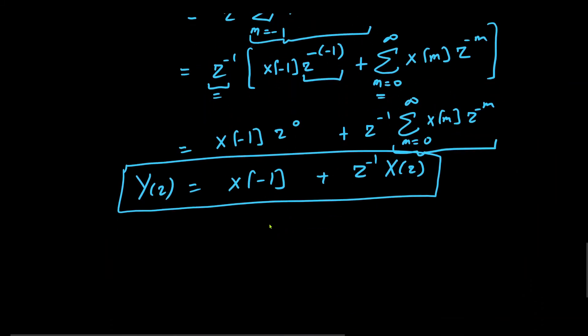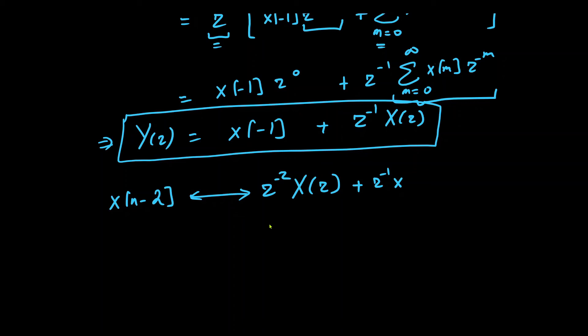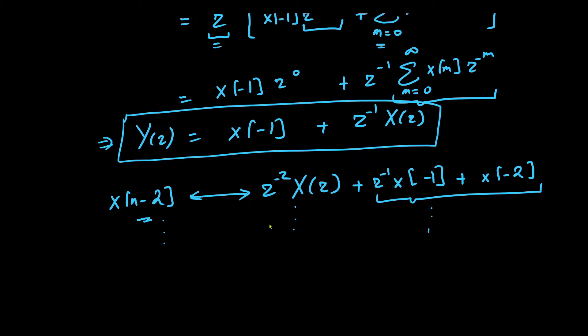For repeated applications — for example x[n-2] — the z-transform is z^(-2)·X(z) + z^(-1)·x[-1] + x[-2]. So if the delay is two units, we have two auxiliary conditions to satisfy in the z-domain. Successively, as the delay increases, the number of initial conditions also increases.